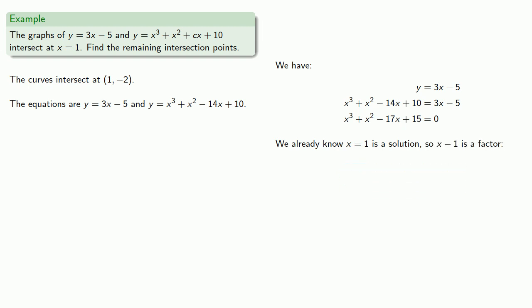So we can factor the left-hand side as x minus 1 times something. We can find the something by dividing.